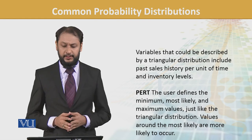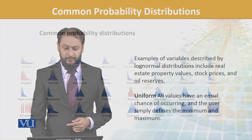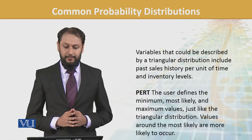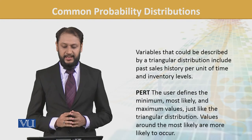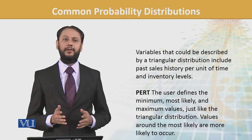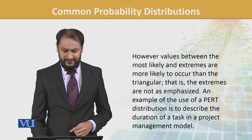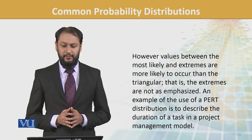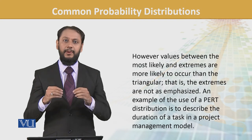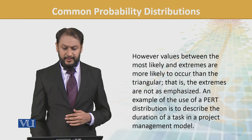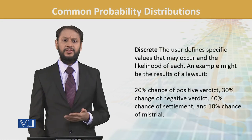Then we have PERT — let's see from the table first, you can spot it in the third column. The user defines minimum, most likely, and maximum values — just like the triangle. Values around the most likely are more likely to occur. Yeh kaafi similar hai triangle se, lekin iski jo path hai woh thoda differ karta hai — the extremes are not emphasized and values mainly rehte hain mid ke paas.